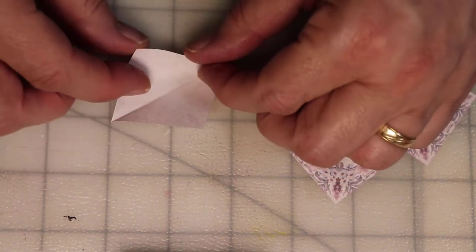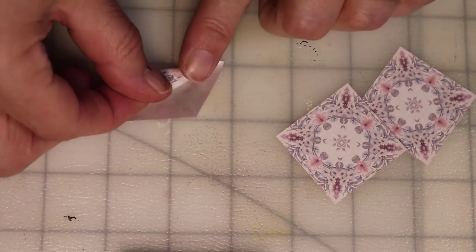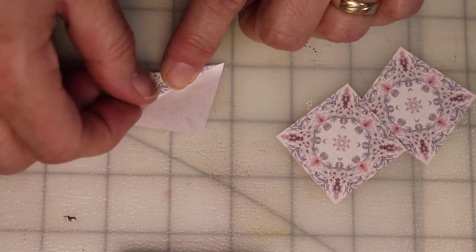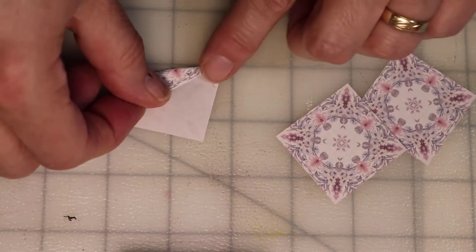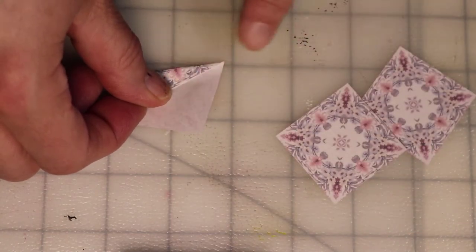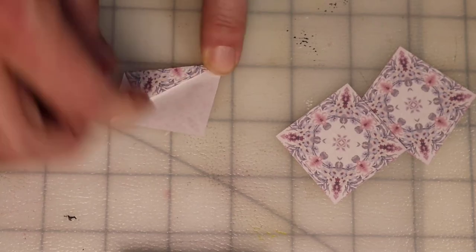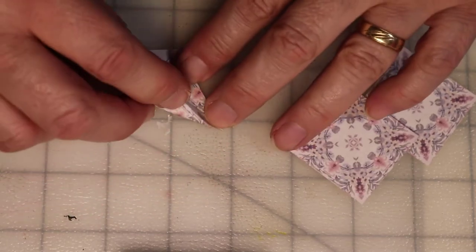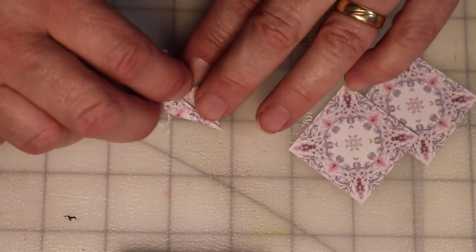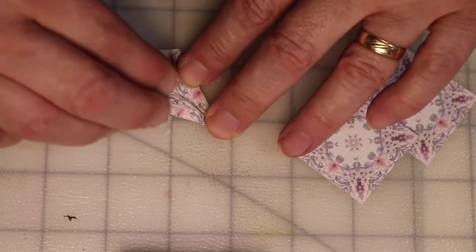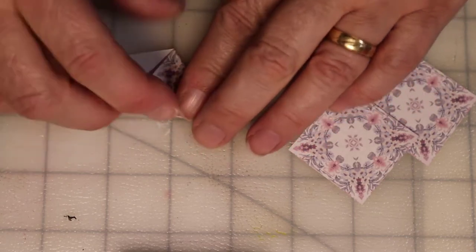I'm going to take the side and fold it to the center, again making sure that I bring this down to a perfect point so it's right along that center line. Then the other side we're going to do the same thing. Fold it in and it should come right up against that first fold.